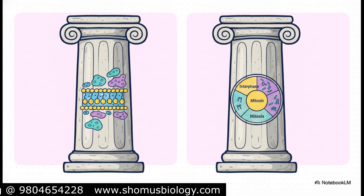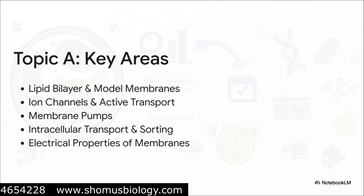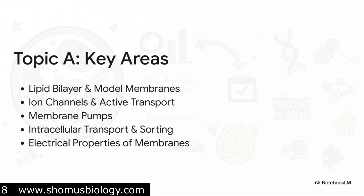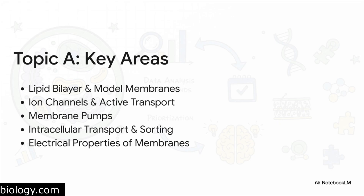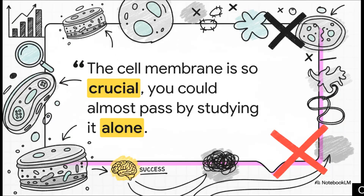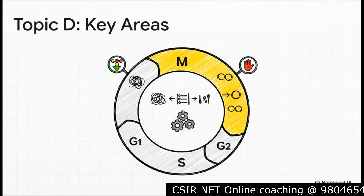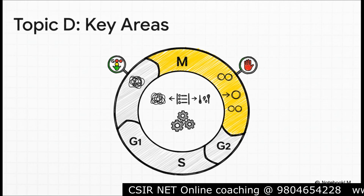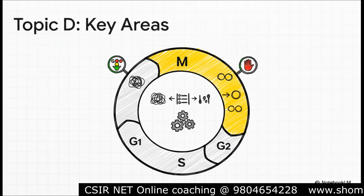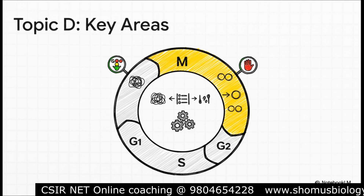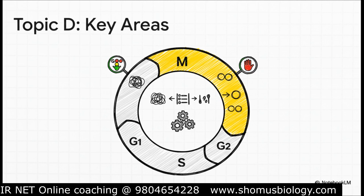For membrane structure, the exam always gets into the nitty-gritty. You have to go deep on the lipid bilayer, ion channels, active transport mechanisms like membrane pumps, how proteins are sorted inside the cell, and even the electrical properties of membranes. Every single one of these is a high-yield area. Some analyses even suggest that the cell membrane is so critical, you could almost pass this unit by focusing on it alone — and if you skip it, it's nearly impossible to succeed no matter how well you know everything else. For the cell cycle, examiners love asking about the phases of mitosis and meiosis, with special emphasis on mitosis. You must master the steps, the critical regulatory checkpoints like G1-S and G2-M, and the key molecular players — cyclins and cyclin-dependent kinases. This area is pure high-frequency gold.